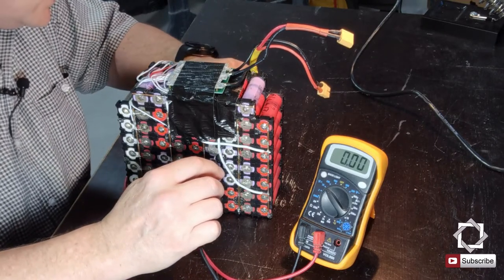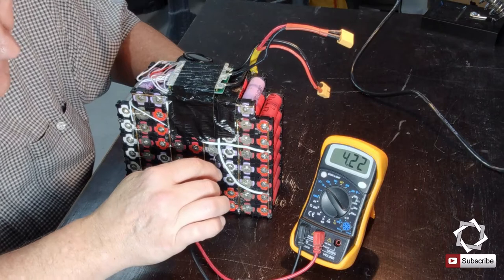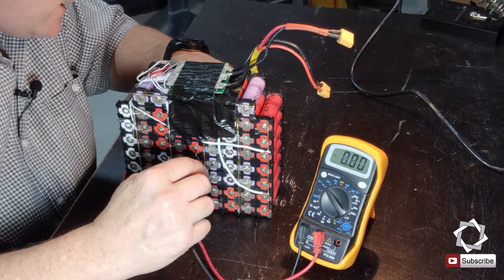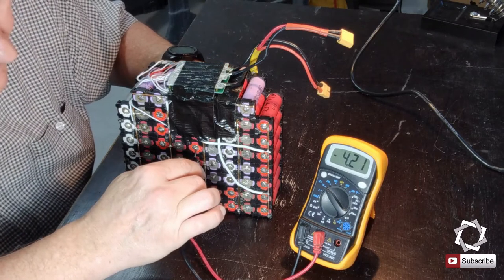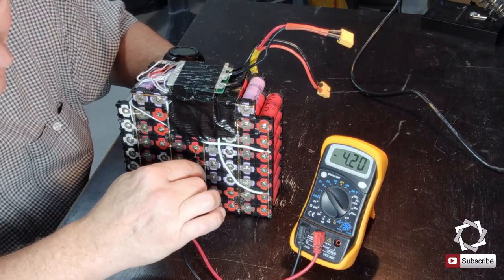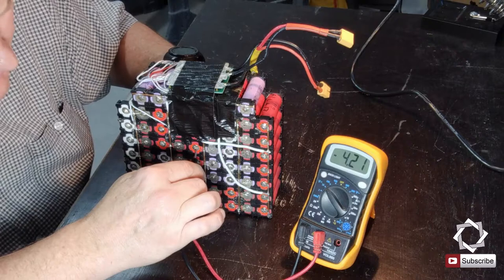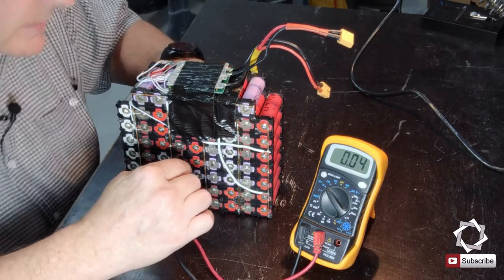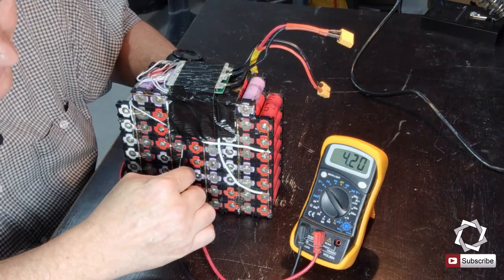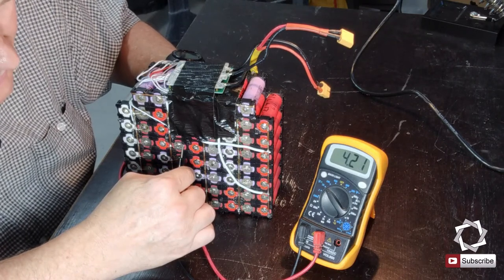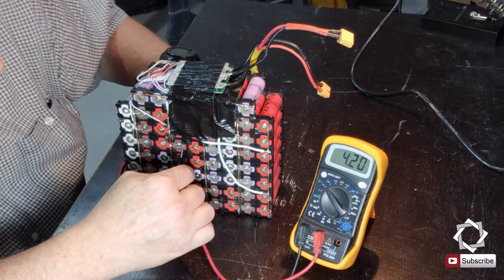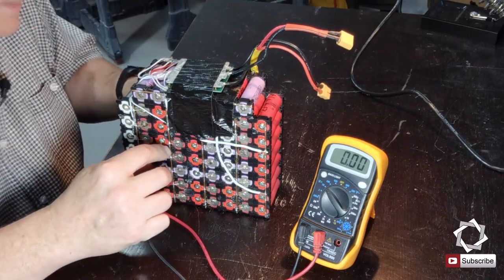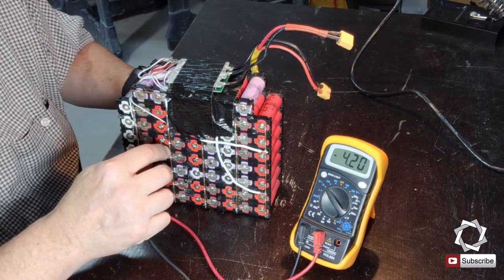And the next one in series here, 4.22, so that's a little high but it's right there within the range. And the next cell set, 4.21, it's kind of bouncing on 2.0 and 2.1, so it's a little bit lower than the others but not too bad. And the next one in line here, 4.2. Oh, there's 2.1, okay, so it did jump to 2.1.